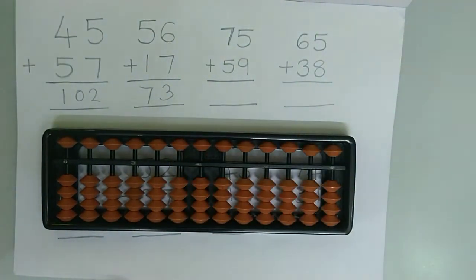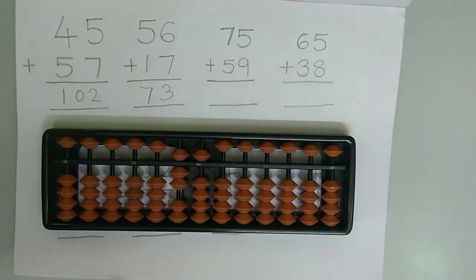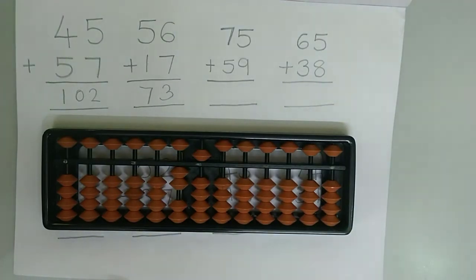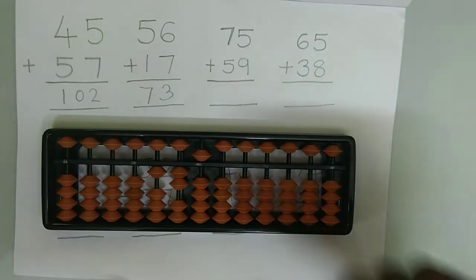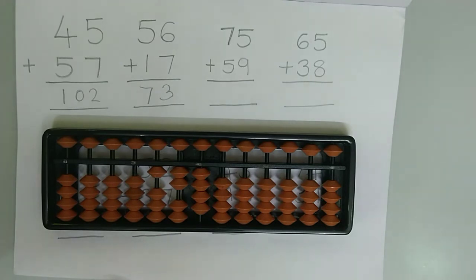Let's try the next example which is 75 plus 59. First we need to represent 75 on the abacus. Now we need to add 5 to the tens rod. For that we use the big friend concept. The friend of 5 is 5, so we need to subtract 5 and add the boss which is 10. Now we need to add 9 to the ones rod. The friend of 9 is 1, so we need to subtract 1. To subtract 1 from 5 we again use the small friend concept. The friend of 1 is 4, so we add 4 and subtract the boss which is 5. And again at the last we should not forget to add the big friend boss in the tens rod which is 10. The answer is 134.